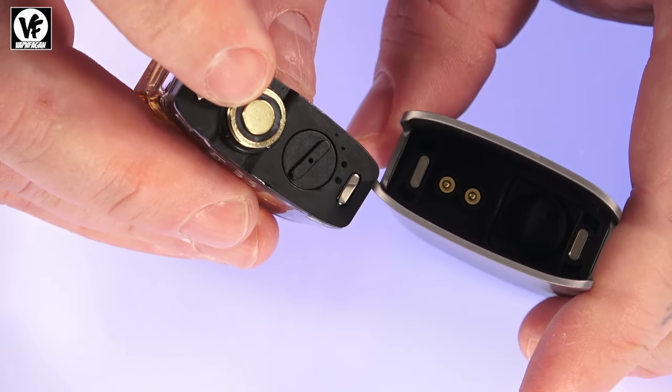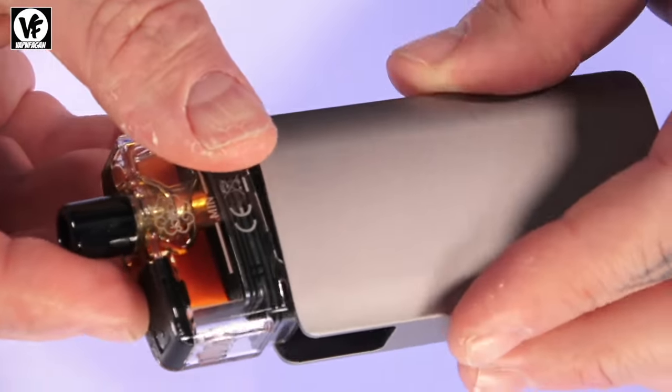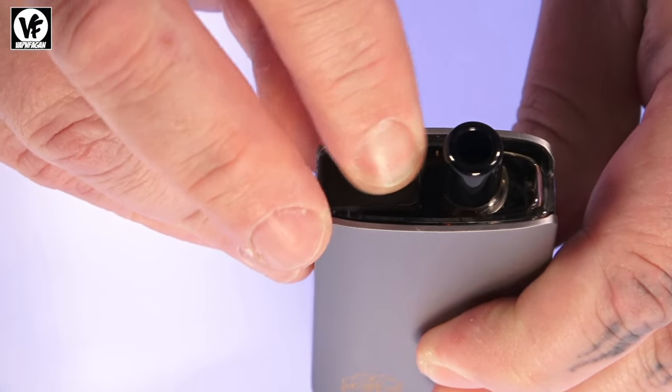It only goes in one way, so you got your coil head. Just line up your coil head with the contacts right there. It'll slide, click into place, and you can fill this without having to remove it, which is nice. But once again, just be a little easy with the door right here.